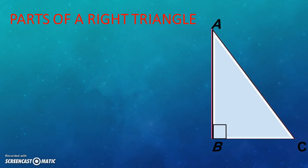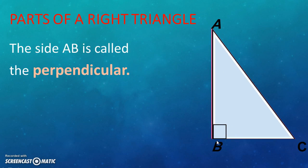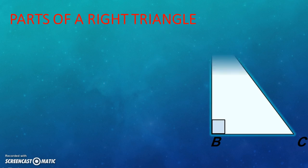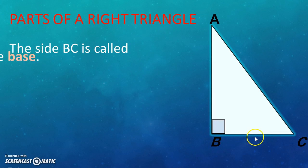The side AB in this triangle is known as perpendicular. The side BC in this triangle is known as base. We can see that the right angle exists between side BC and AB.